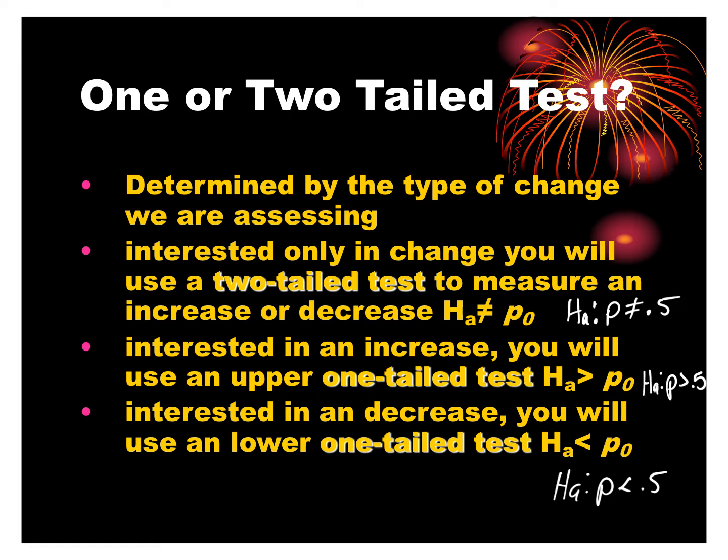Notice that in our alternative hypothesis, the number did not change — it's still 0.5 — because that was our null hypothesis. The only thing that's changing is the inequality symbol: not equal to, greater than, or less than. The numbers do not change.